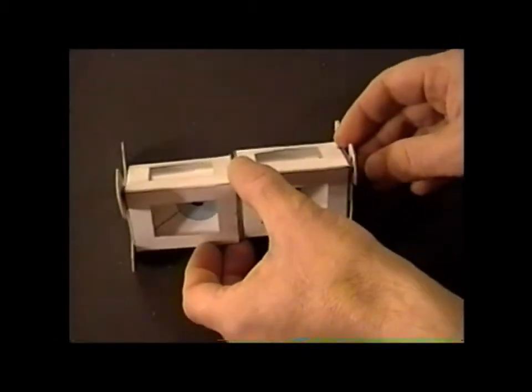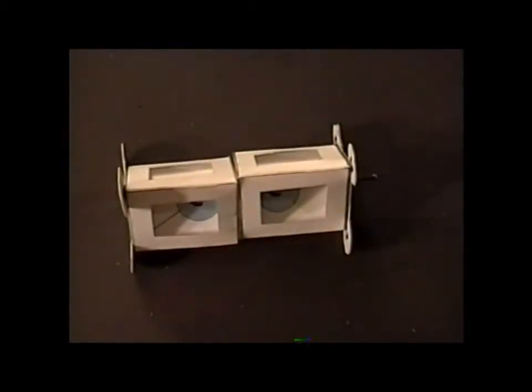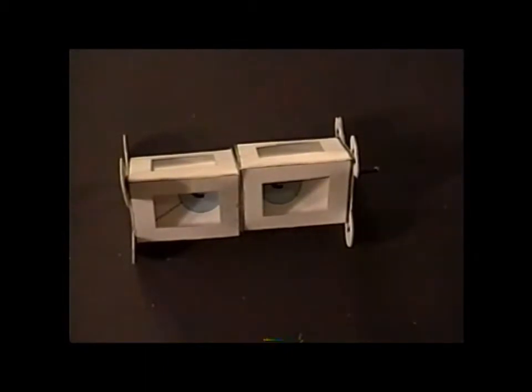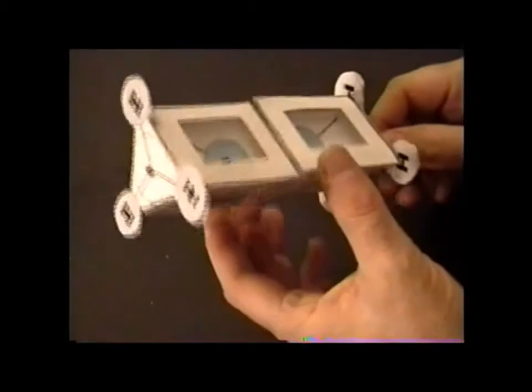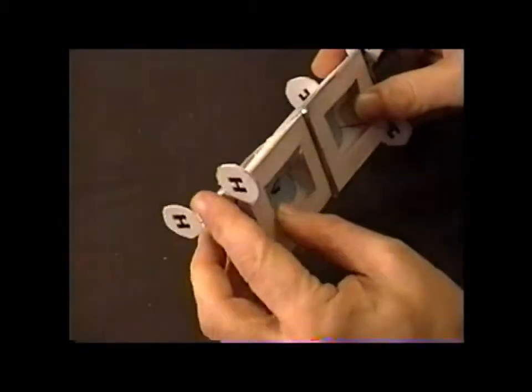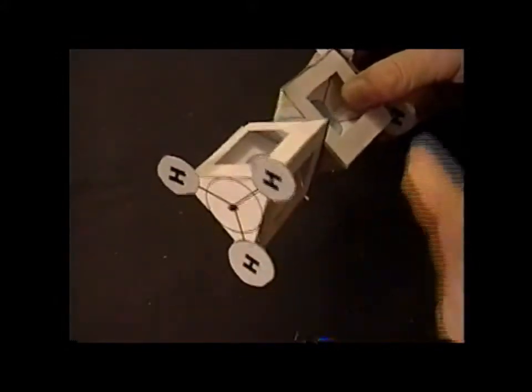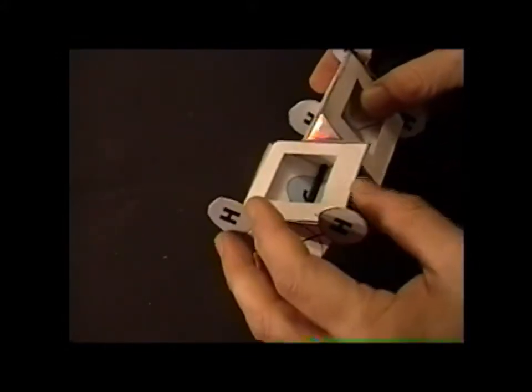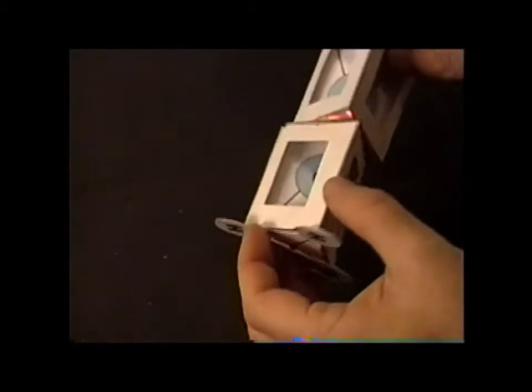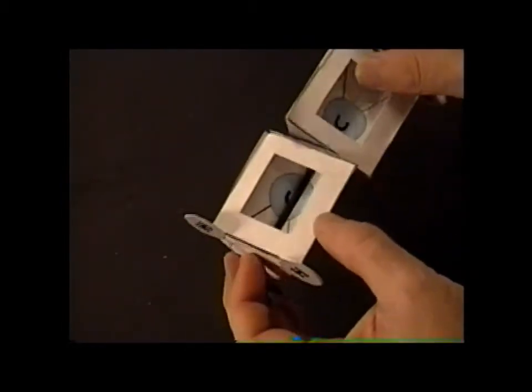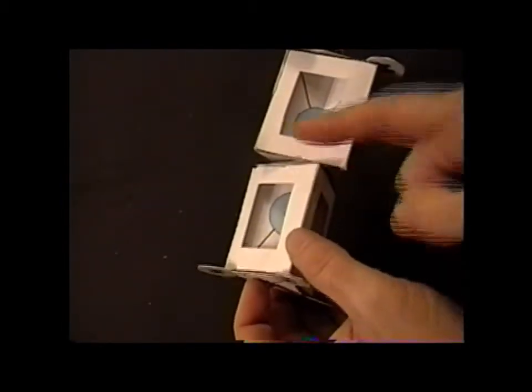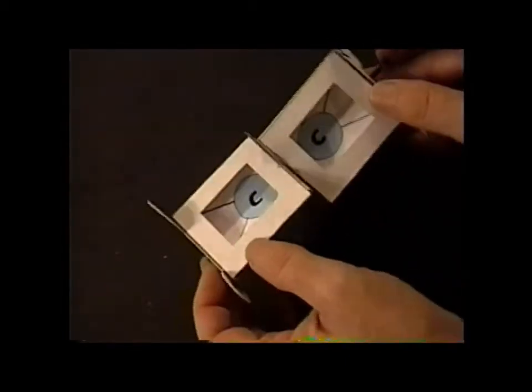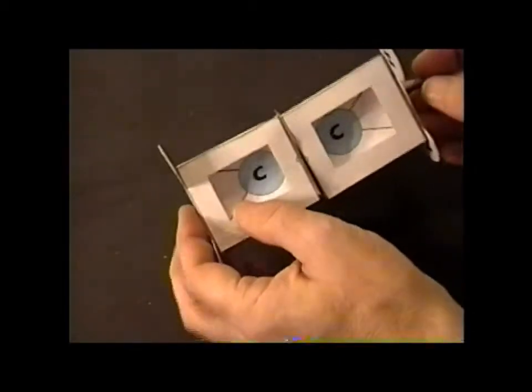This type of model also allows us to demonstrate a possible mirror plane, which will be right there. It doesn't show the C2s very well that may be going along here. But it allows us to do a great deal with the rest of the ethane molecule.